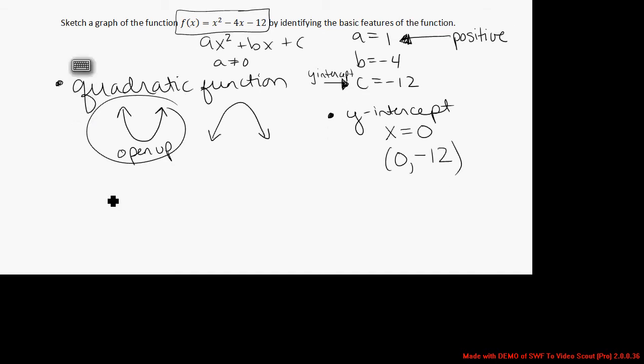And lastly, another relatively easy thing to find is the vertex. Remember, the vertex is the point on the graph of the parabola that's either the very, very highest point, the maximum, or the very, very lowest point, the minimum. Now in this case, we know we have a parabola that opens up, so our vertex will be the very, very lowest point on the graph. It will be the minimum.